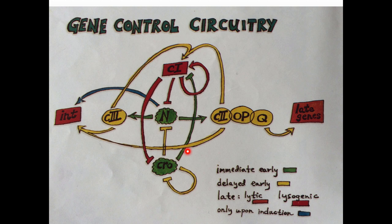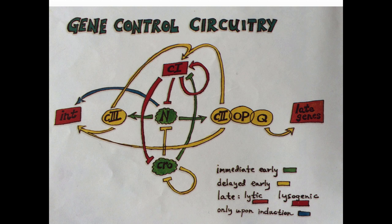If we're thinking about lysogenic growth, it's all about CI. CI makes more of itself, blocks the N protein — which is critical for lytic growth — and also blocks Cro. On the other hand, if you have Cro, that blocks CI and leads to lytic production. A student asked what cleaves CI. It's actually a cellular protease which will break down CI, and that cellular protease is activated when there's DNA damage.